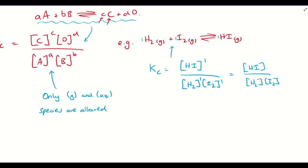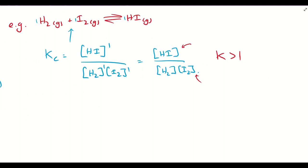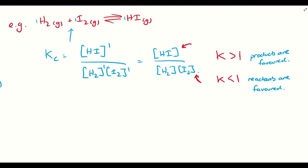What does Kc actually tell us? If K is greater than 1, the numerator is bigger than the denominator, meaning the concentration of products is greater than the concentration of reactants — so the products are favored and equilibrium lies to the right. If K is less than 1, the reactants are larger than the products, so the reactants are favored and equilibrium lies to the left.